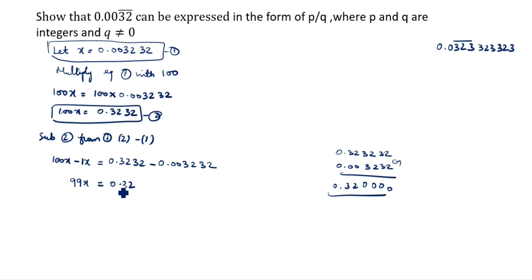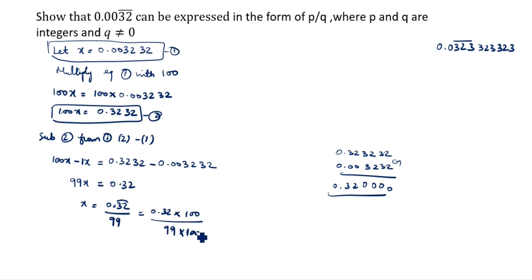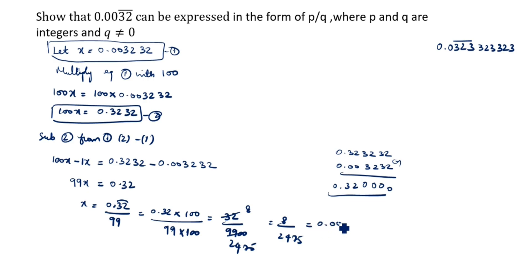The result is 99x equals 0.3232 minus 0.003232, which equals 0.32. So x equals 0.32 divided by 99. Since there are two decimal digits, we multiply and divide by 100, giving 32 divided by 9900. Simplifying, the answer is x equals 8 divided by 2475.